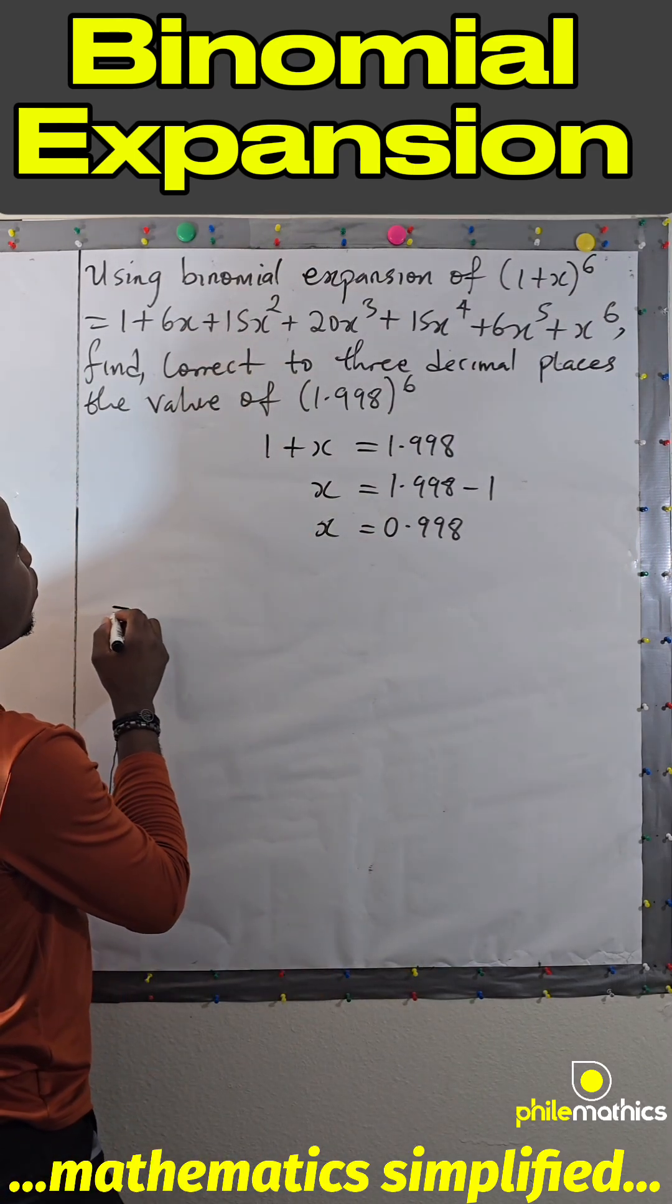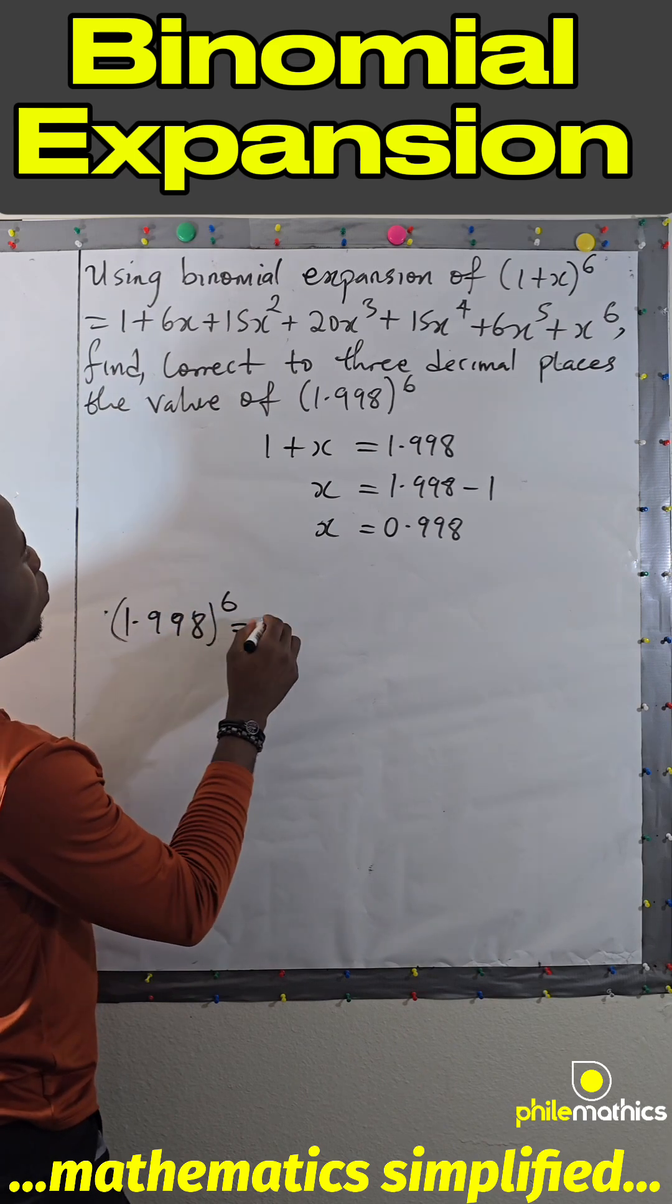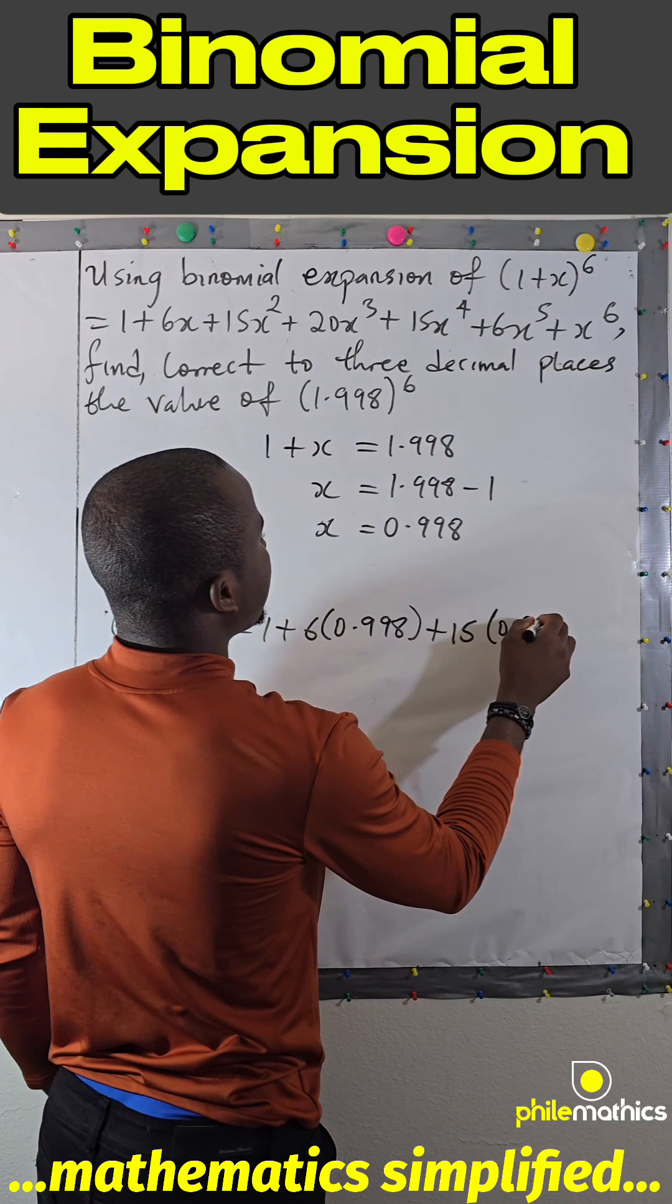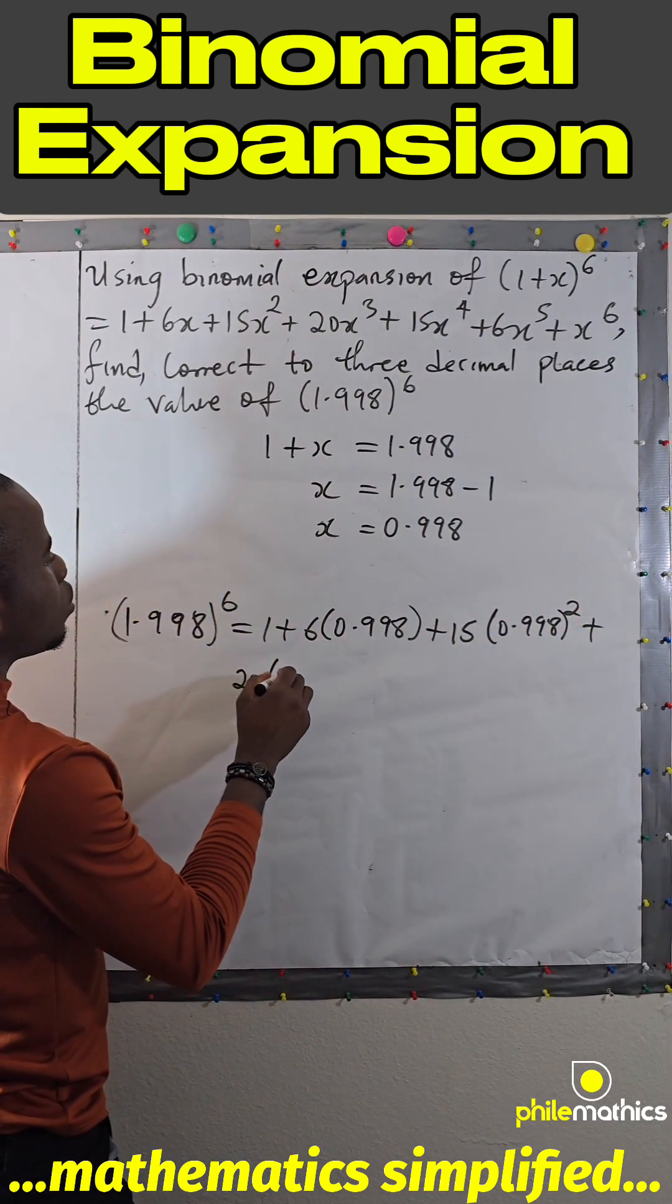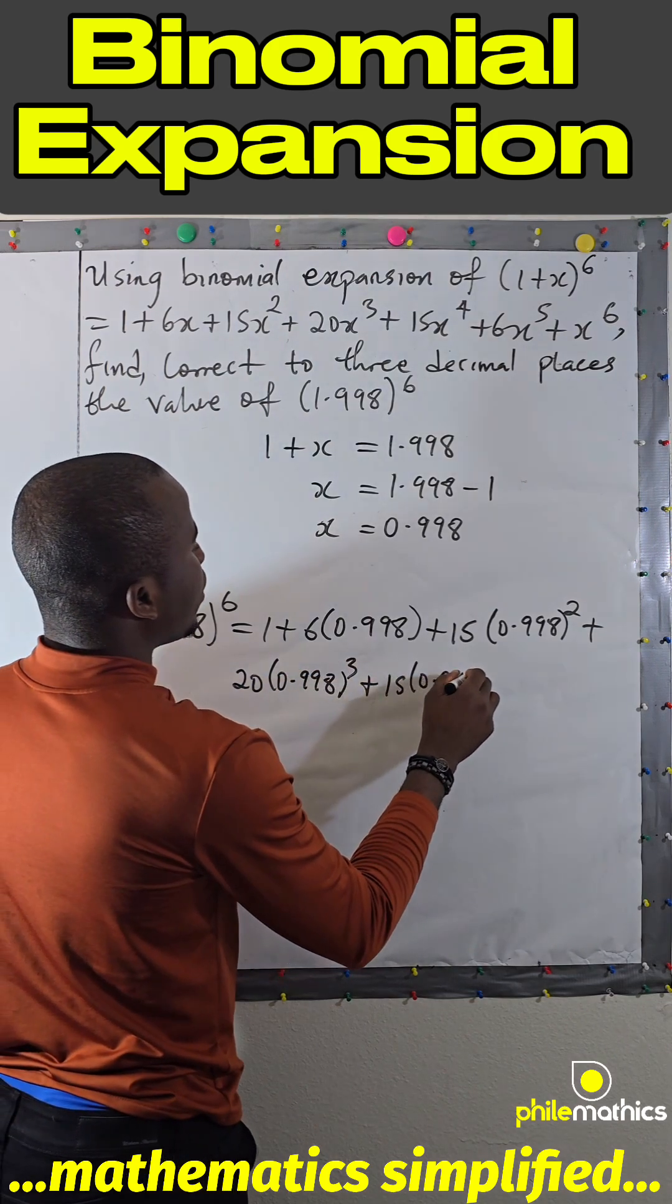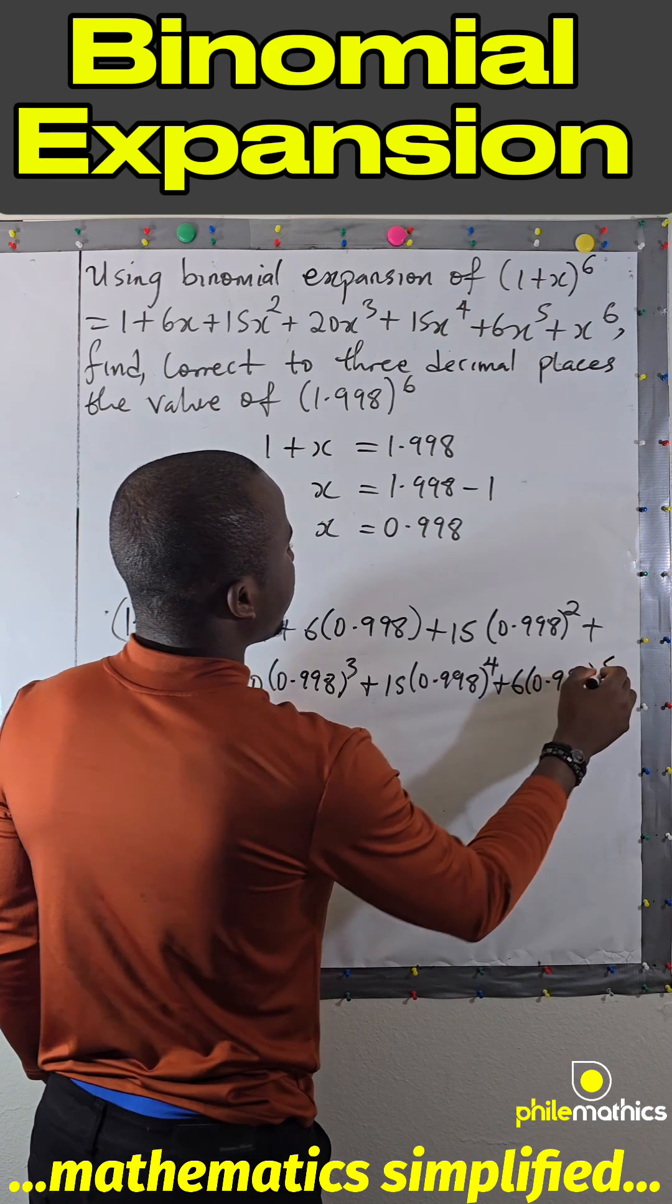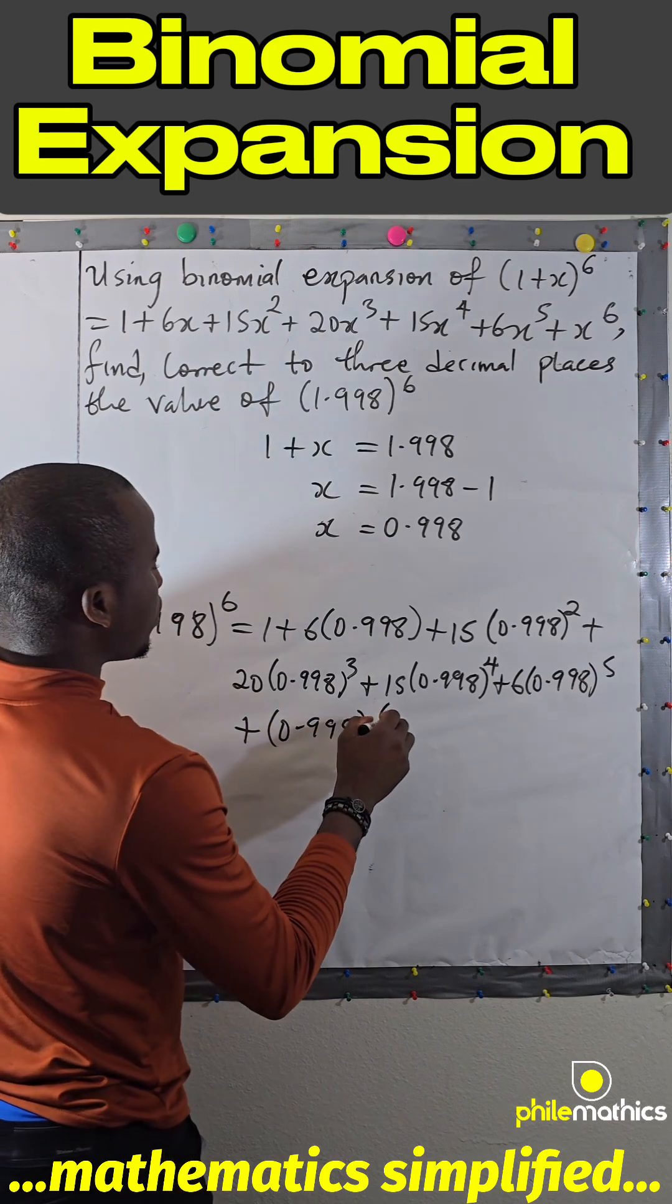(1.998)⁶ = 1 + 6(0.998) + 15(0.998)² + 20(0.998)³ + 15(0.998)⁴ + 6(0.998)⁵ + (0.998)⁶.